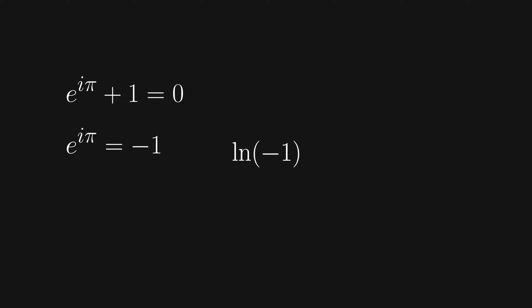Substituting this new definition for negative 1 into our expression, we're left with natural log of e to the i pi. And by this point, we're pretty much done. Recall that the definition of the natural log is the function that cancels out exponentiation by e. Since the natural log and e cancel each other out, we're left with a pretty satisfying answer, i pi.